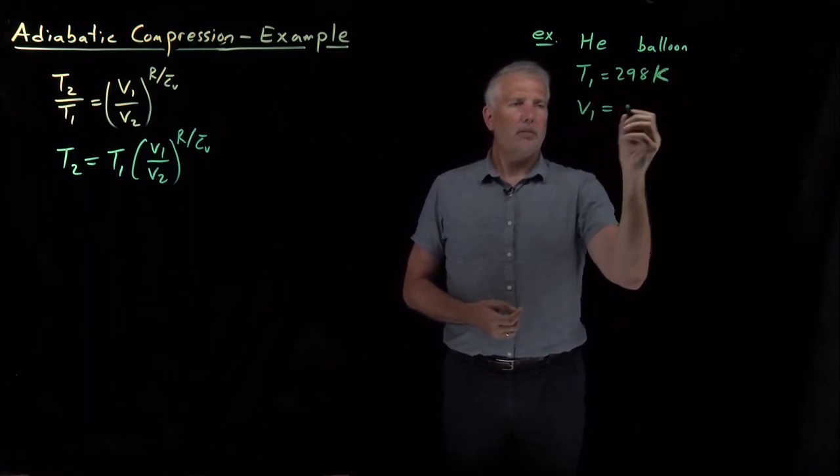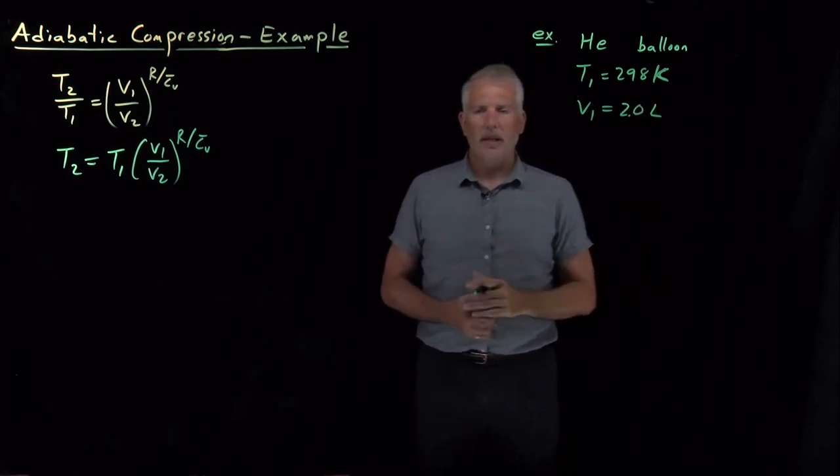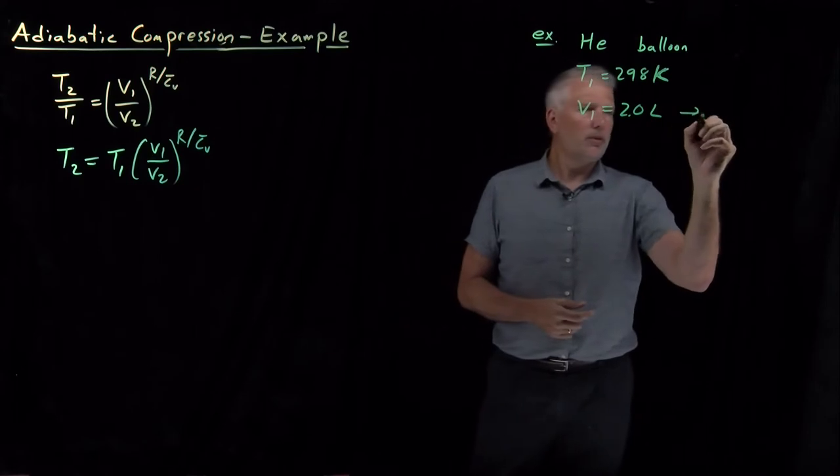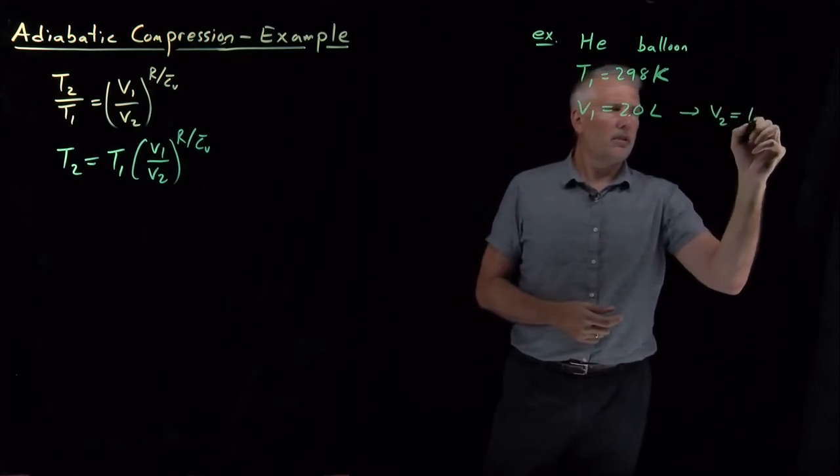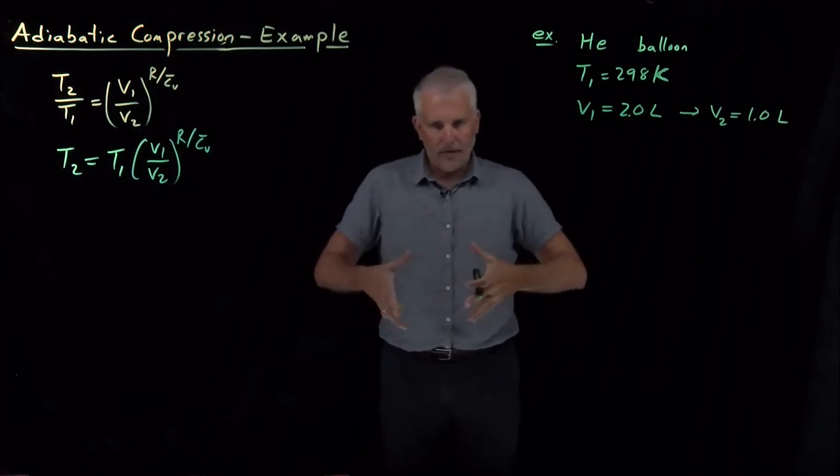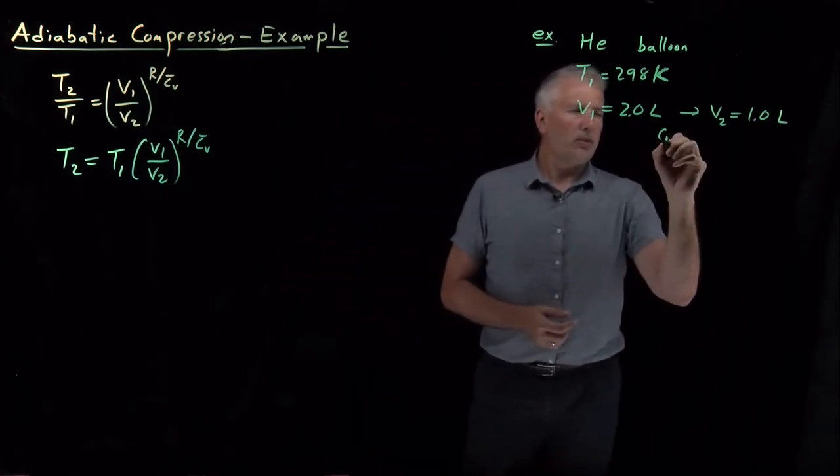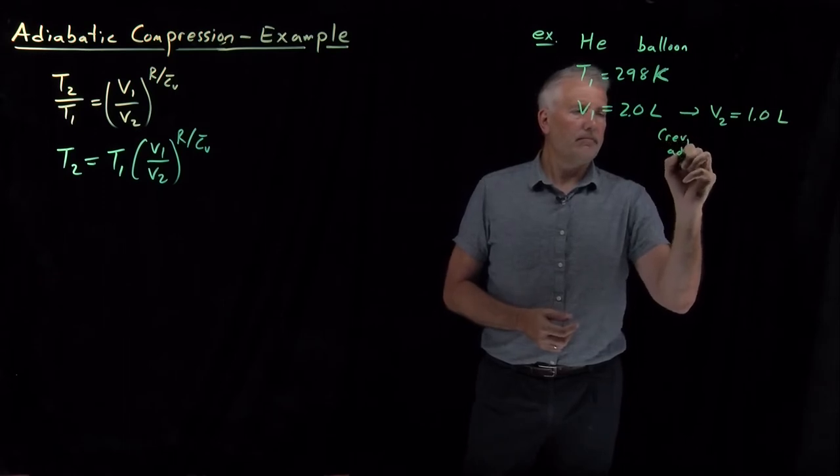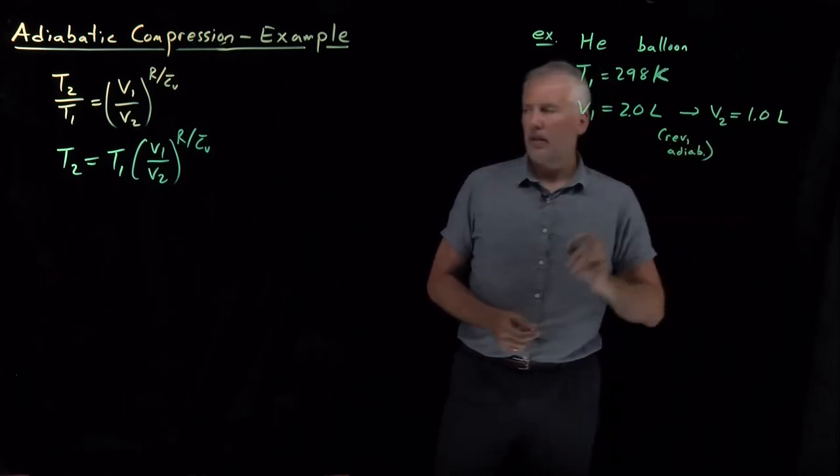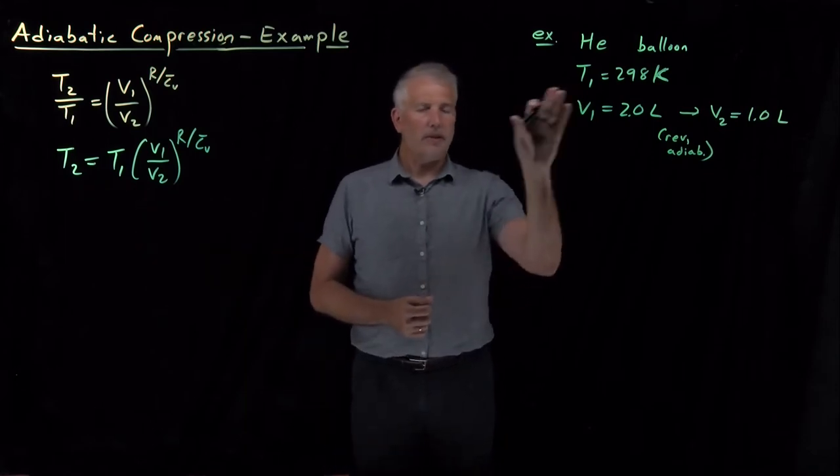My balloon is initially at a volume of two liters, and I'm going to compress that balloon down to a final volume of one liter. So I'm halving the volume of the balloon. I need to make sure and do that reversibly and adiabatically. Under those conditions, I can use this expression to find out what the final temperature is going to be.